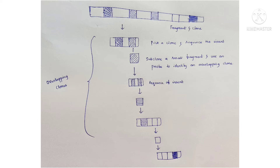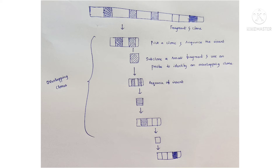The end of the second clone is then subcloned and used for hybridization with other clones. This helps in identifying a third clone which has an overlapping region with the subclone end of the second clone. The identified third clone is also subcloned and hybridized with the library clones in a similar manner.